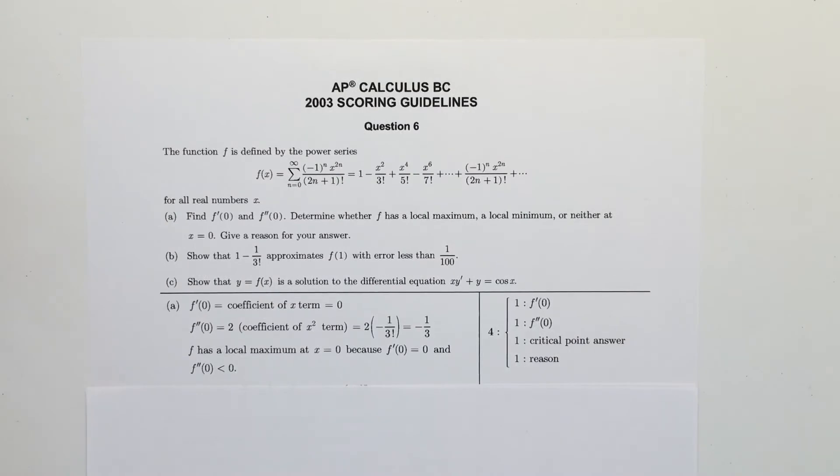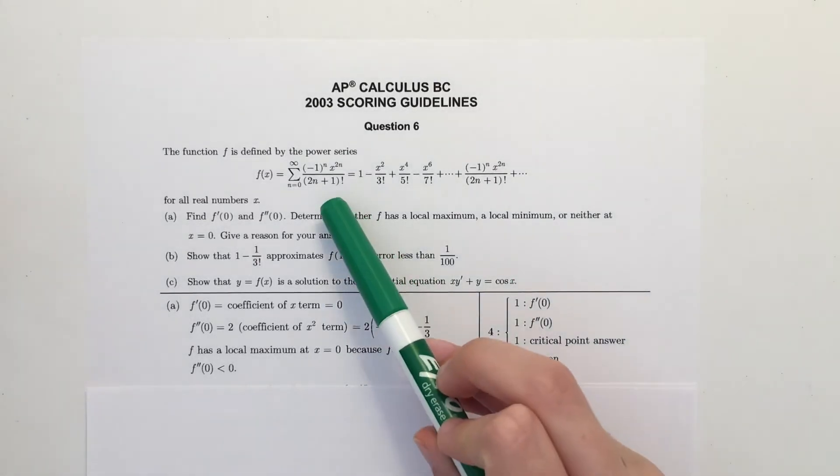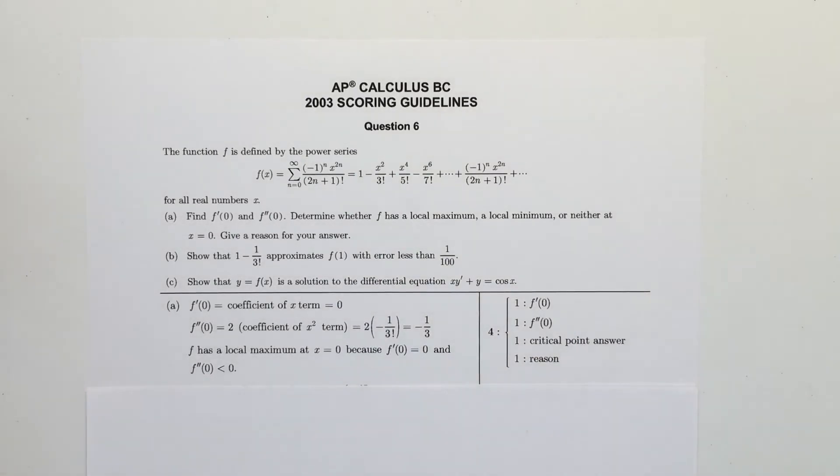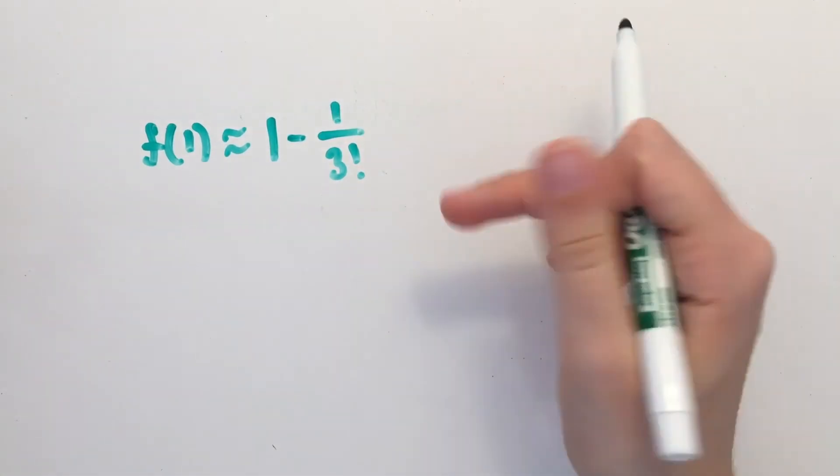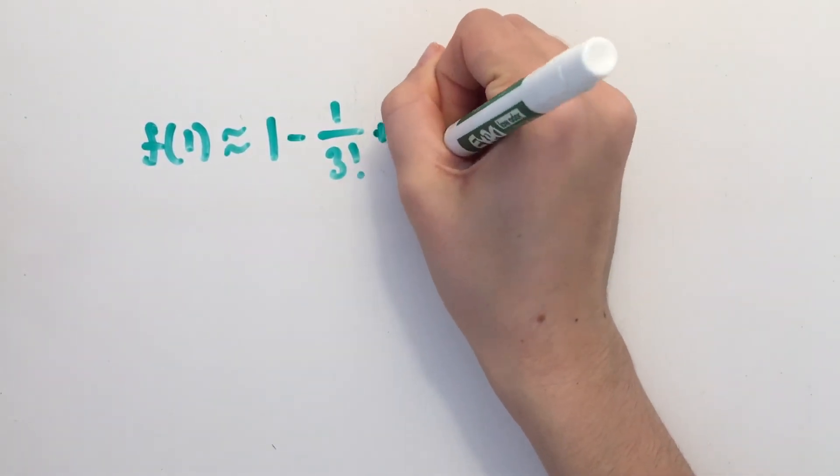Part B asks us to show that 1 minus 1 over 3 factorial approximates f of 1 with error less than 1 over 100. The first thing you want to recognize is that f of x is an alternating series, as you can see by this negative 1 to the n power. This means that we are going to use the alternating series error to show that the error is less than 1 over 100. The first thing you want to recognize is that f of 1 is equal to 1 minus 1 over 3 factorial when you approximate the series to two terms. Because it's an alternating series, you want to go to the next term, which is 1 over 5 factorial.